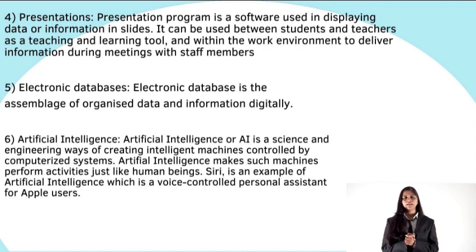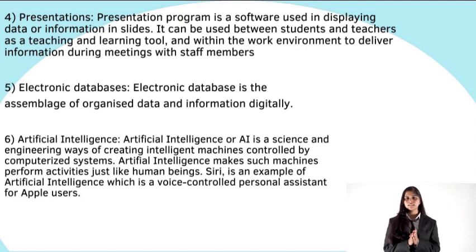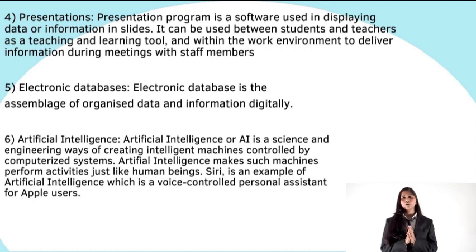Then there are electronic databases. These are the assemblage of organized data and information digitally. Sixth, there is artificial intelligence, or AI. It is a kind of science and engineering for creating intelligent machines controlled by a computerized system. Artificial intelligence makes such machines perform activities just like human beings. An example is Siri — if you are an Apple phone user, you have access to Siri, which is a kind of artificial intelligence.